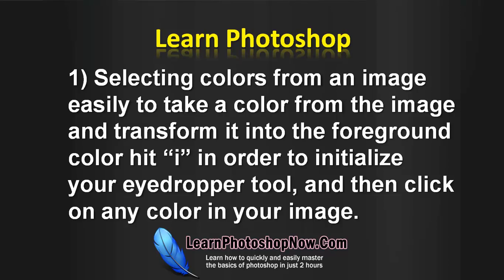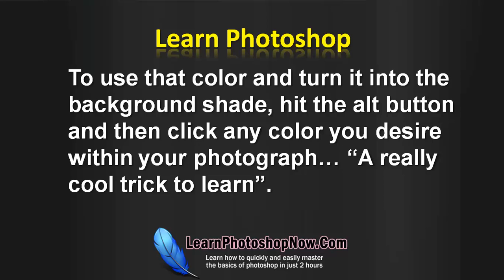First, selecting colours from an image easily. To take a colour from the image and transform it into the foreground colour, just hit I to initialise your eyedropper tool and then click on any colour in your image. To use that colour as the background shade, hit the Alt button and then click on any colour you desire within your photograph. A really cool trick to learn.